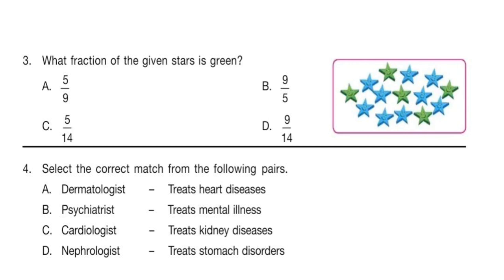Question 4. Select the correct match from the following pairs. Option A: Dermatologist treats heart diseases. Option B: Psychiatrist treats mental illness. Option C: Cardiologist treats kidney diseases. Option D: Nephrologist treats stomach disorders. The correct match is option B: Psychiatrist treats mental illness.